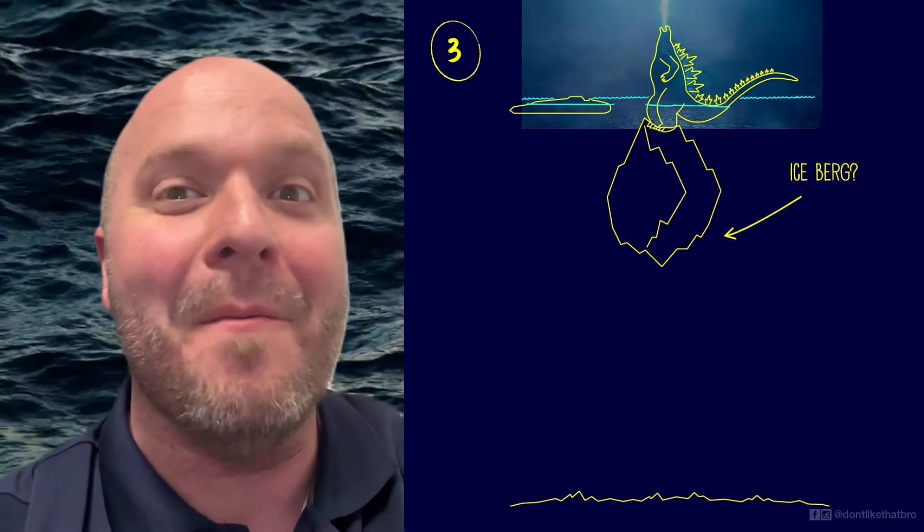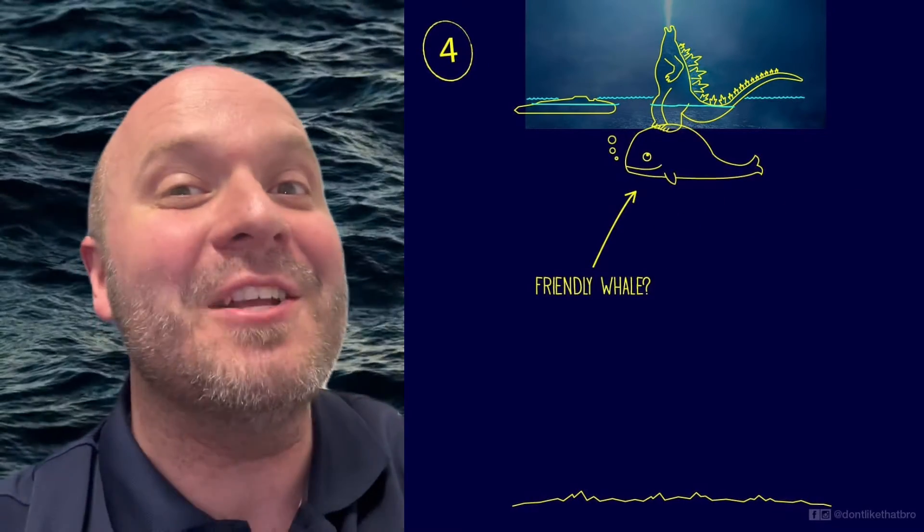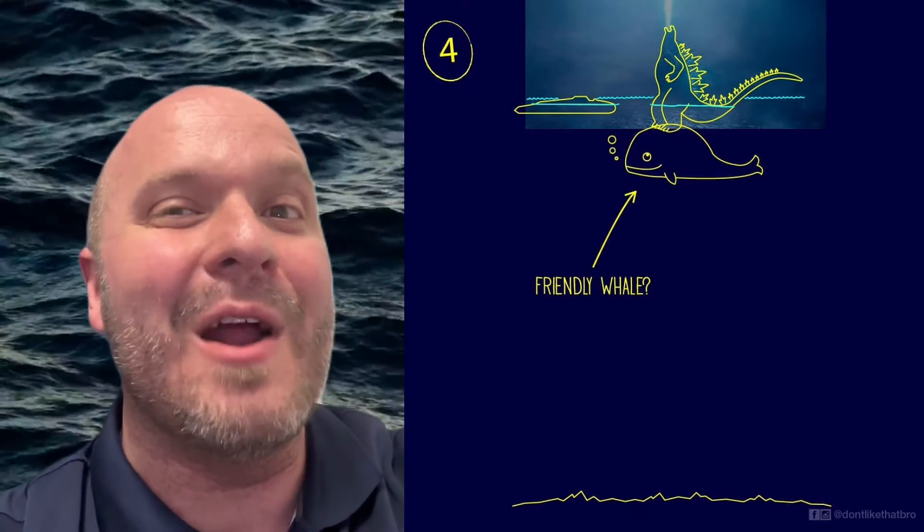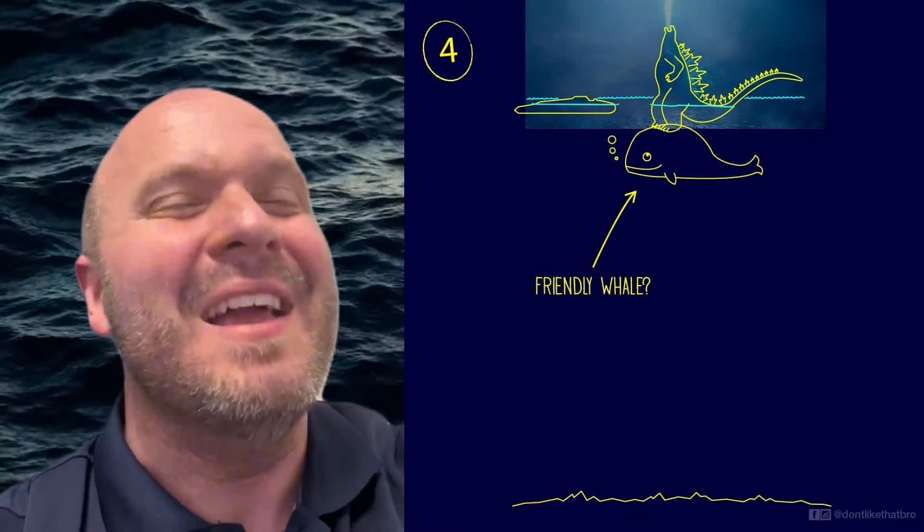But you know what would be even more ridiculous? If we found out Godzilla is just running around on the back of a friendly whale. This could explain how he can surface at will, but I gotta say the idea of a whale following him around in the ocean to be his stepping stool is pretty dumb.